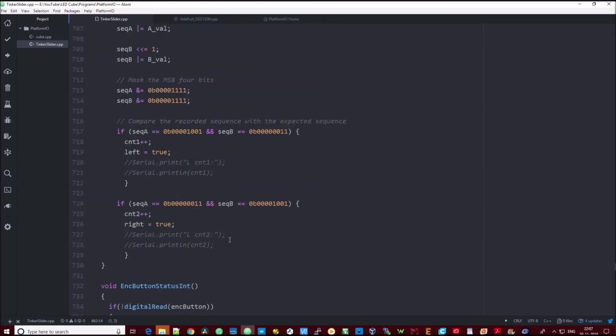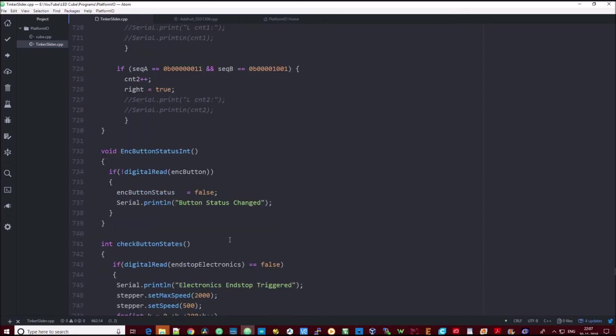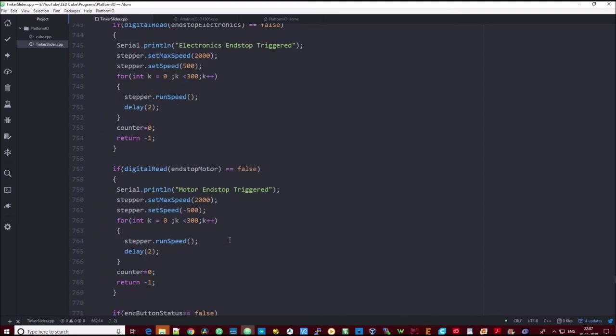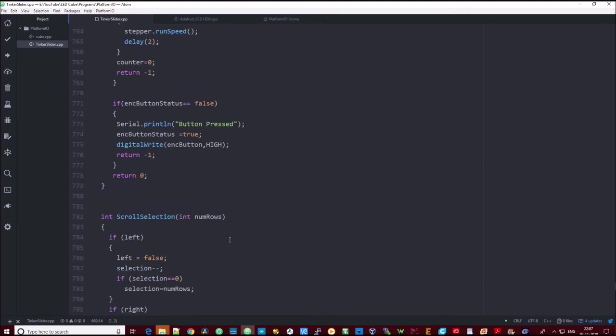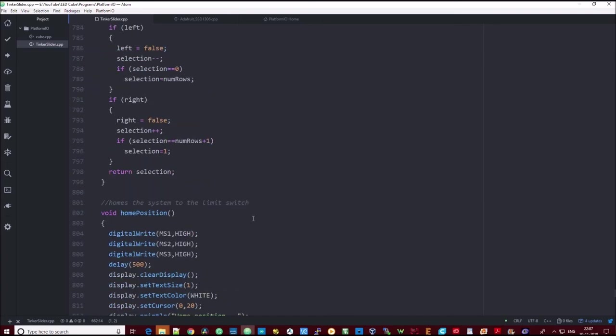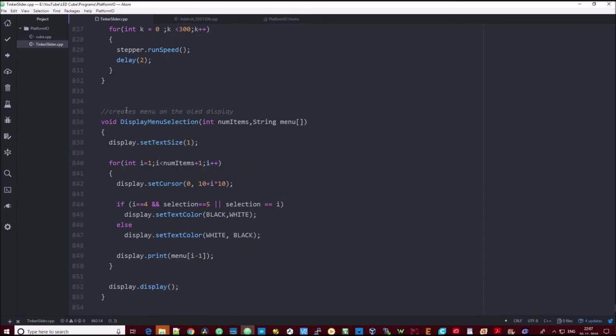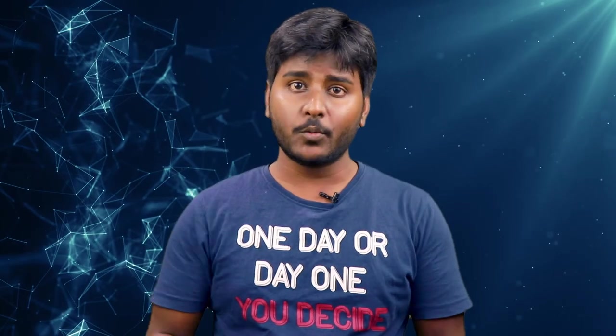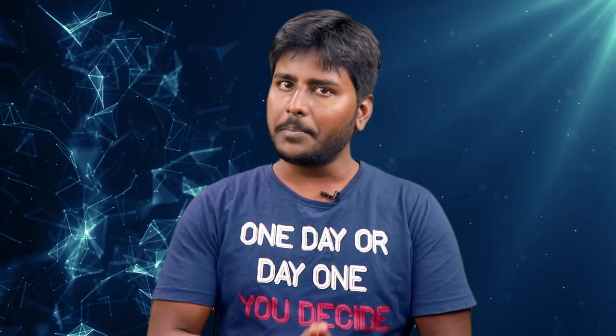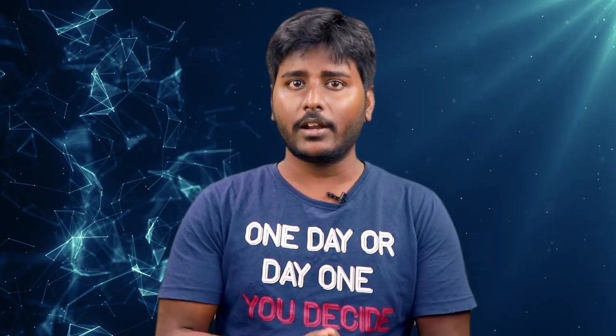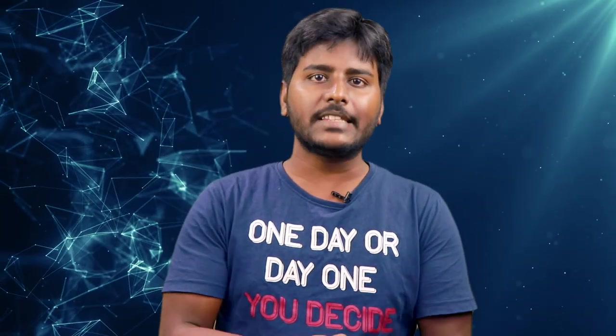Apart from this, there is some code for handling the interrupts, code to check the states of the end stop modules, some code to scroll the display and some utility functions are all here. That's it for this week. Do you like the project? Let me know in the comments. As always, you can download the design files below. Thanks for watching this video. See you again.